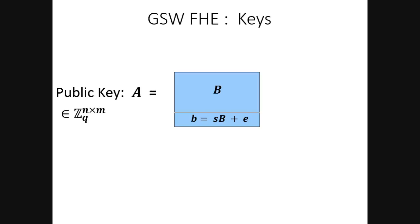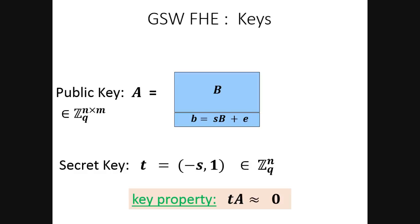In the FHE scheme, the public key is exactly this LWE matrix, which I'll call A. The secret key is a vector t, which is just negative s — where s is the linear combination — with a one appended at the end. The main property to remember is that if you take t times A, you just get the error vector e, so you get something close to zero. So t times A is approximately zero.